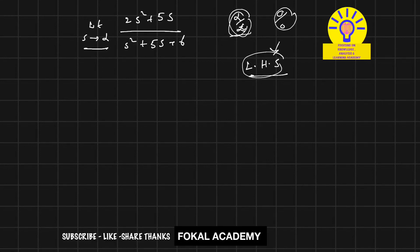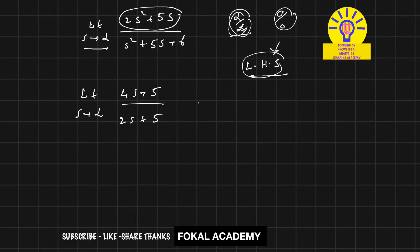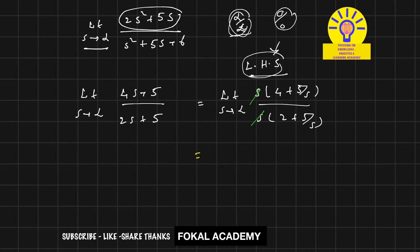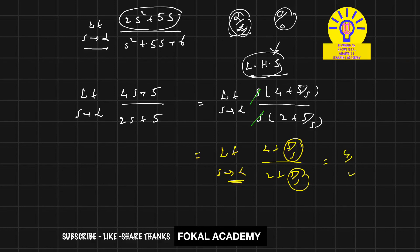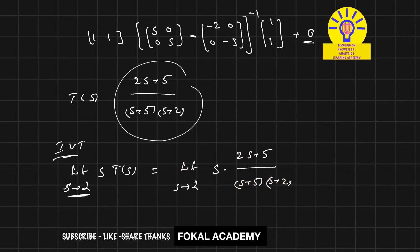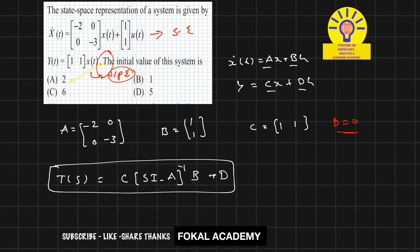Applying the derivative, we get: limit s→∞ of (4s + 5) / (2s + 5). Taking s common from numerator and denominator gives: limit s→∞ of s(4 + 5/s) / s(2 + 5/s). The s cancels, giving limit s→∞ of (4 + 5/s) / (2 + 5/s). Substituting s→∞, the terms 5/s become 0, leaving 4/2 = 2. So the answer is 2, which is the correct option.